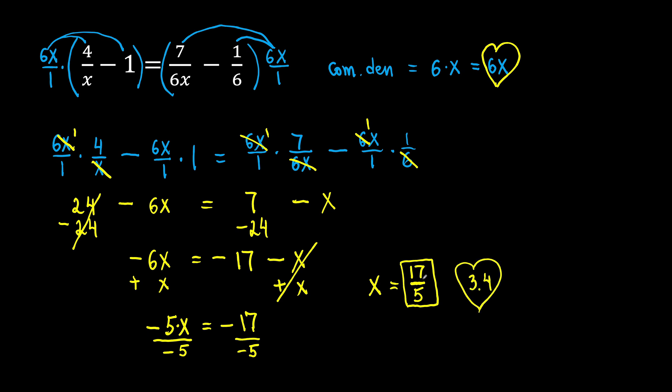If we want to change it into a mixed number, we set up a long division. Look. 17 divided by 5. 5 goes into 17 three times. 3 times 5 is 15. So 17 minus 15 is 2. So 17 over 5 is equal to... So 5 goes into 17 three times. So 3 will be the whole number. The remainder 2 will be the new numerator. And keep the same denominator 5. 3 and 2 fifths. This is the answer as a mixed number.